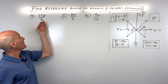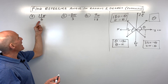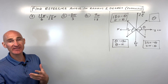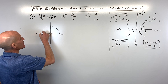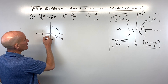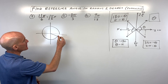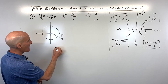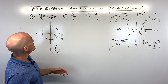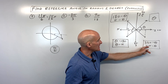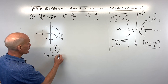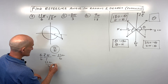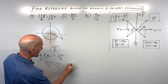Now let's do some in radians. Number four: 11π over 6. When the fraction is improper, I like to convert it to a mixed number. 6 goes into 11 once with 5 left over, so this is 1 and 5/6 π. One π is 180 degrees, plus another 5/6 π puts us in the fourth quadrant. Dropping a perpendicular, it takes another 1/6 π to reach the x-axis, so the reference angle is π/6. Using the formula: 2π minus 11π/6 equals 12π/6 minus 11π/6, which is π/6 — the same answer.